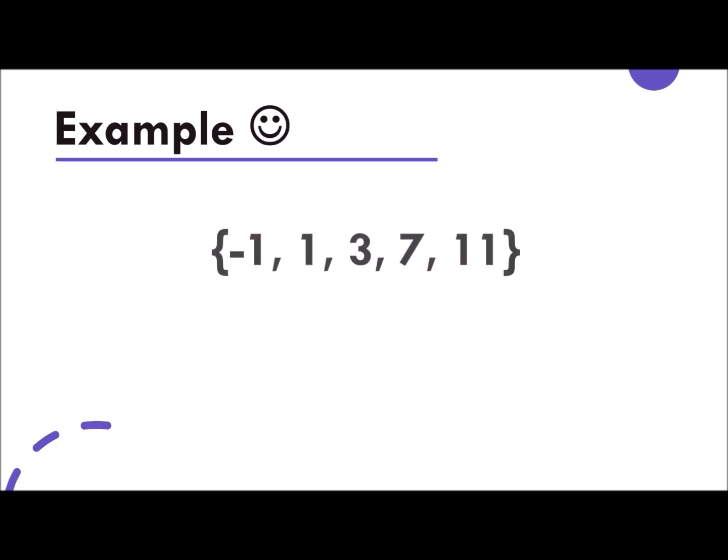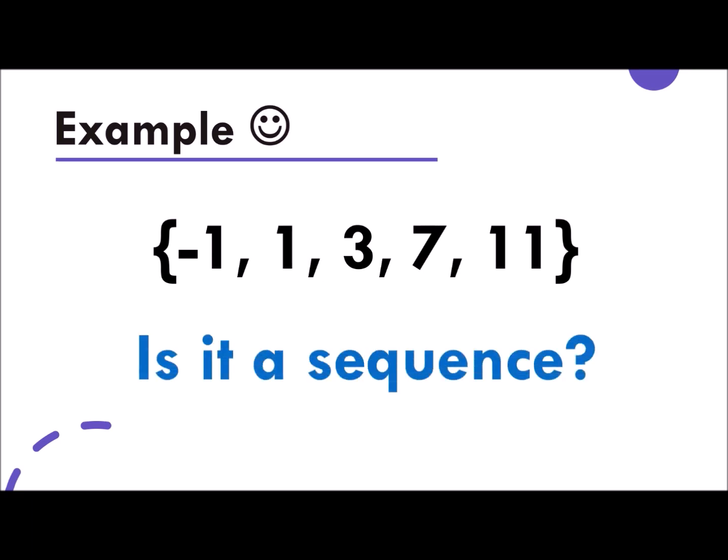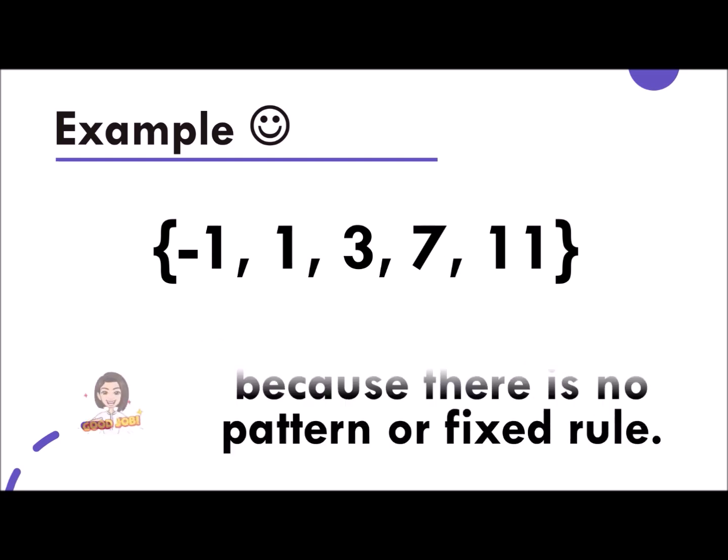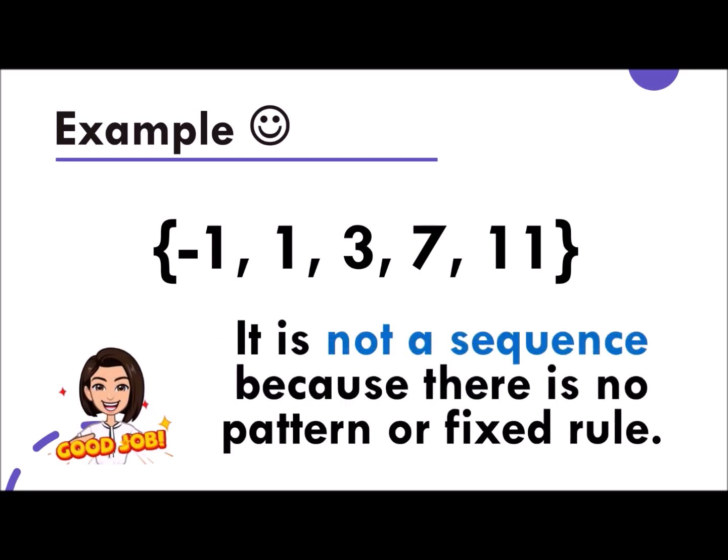Let's have another one. Negative 1, 1, 3, 7, and 11. Is it a sequence? Very good! It is not a sequence because there is no pattern or fixed rule.